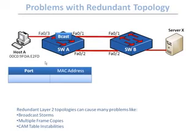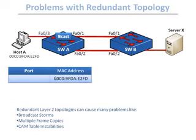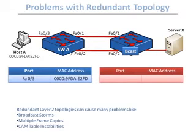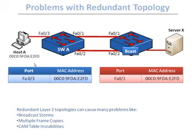Switch A uses this approach to perform intelligent packet forwarding — sending packets only to the correct port to reach the destination. When it reads the source MAC address of host A, it records that MAC address in its table associated with port F03, which is where the frame came from.